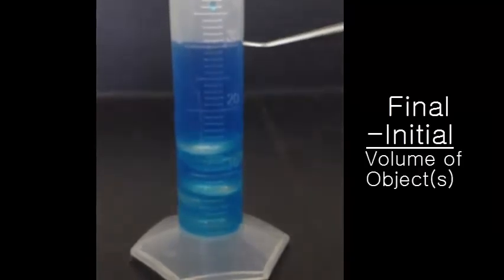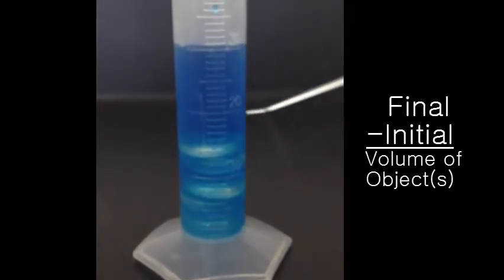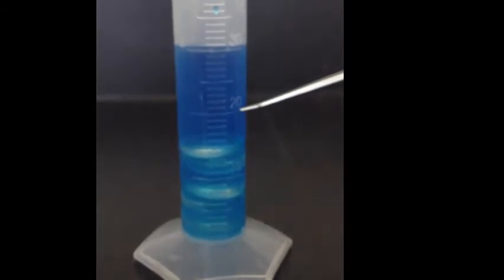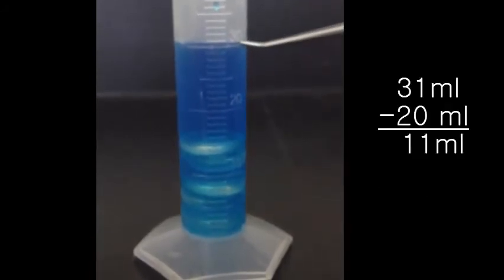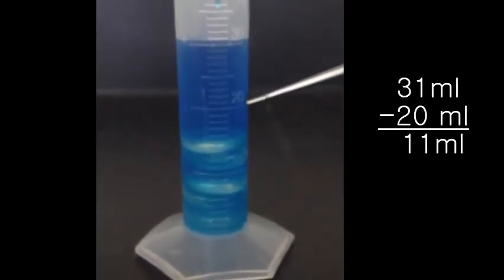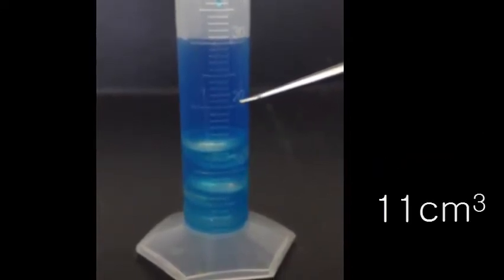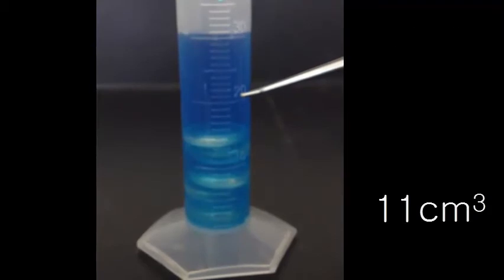Once all the objects have been added to the liquid, you simply take the final volume and subtract from it the initial volume. We began at 20 and are now at 31. 31 minus 20 leaves us with 11. The volume of the marbles is 11 cubic centimeters.